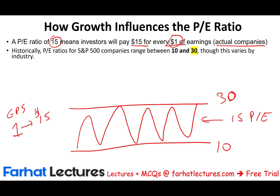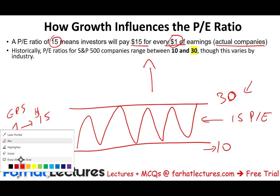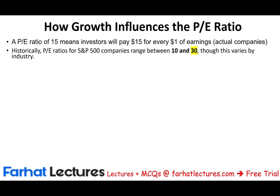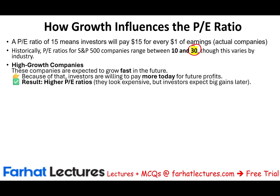If the P/E ratio reaches 30, you're paying $30 for every $1 in profit, which is historically on the expensive side. A low P/E could mean the company is shrinking or lacks future growth potential. The higher the P/E, the higher the implied growth. High-growth companies — expected to grow fast — command high P/E ratios because investors are willing to pay more today for future profits.